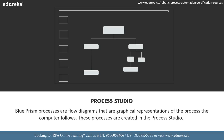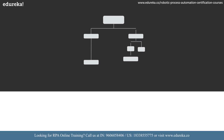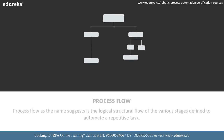On the left-hand side of the process studio you will see a stages toolbar which you can use to create a process. Process flow, as the name suggests, is the logical structural flow of the various stages defined to automate a repetitive task. How you create a process and the various stages in the process is nothing but a process flow.